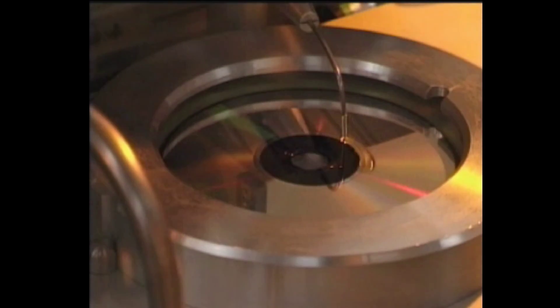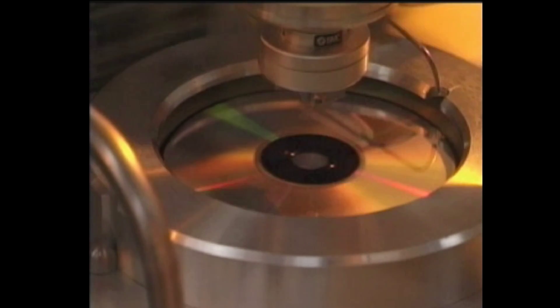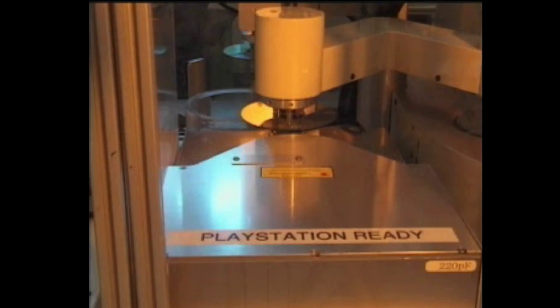A thin aluminum coating allows the laser to reflect off the track and read it. And another machine makes sure there are no defects.